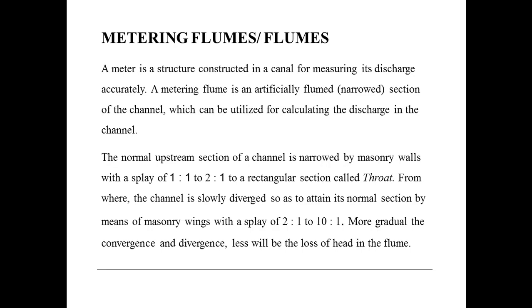The normal upstream section of the channel is narrowed by masonry walls with a splay of 1:2 to a rectangular section called throat, from where the channel is slowly diverged to obtain the normal section by means of masonry wings with a splay of 2:1 to 10:1. More gradual the convergence and divergence, less will be the loss of head in the flume.